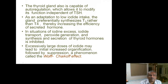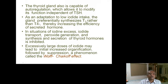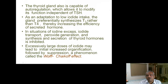Remember, it is always T3 that gives the negative feedback — whether it is T3 coming from the thyroid, from tissue deiodination of T4, or from T4 entering the pituitary. T3 reduces TRH and TSH so that T3 and T4 production is reduced. The thyroid gland also has auto-regulation independent of TSH. As an adaptation to low iodine intake, the gland preferentially synthesizes T3 rather than T4, since T3 is more active.